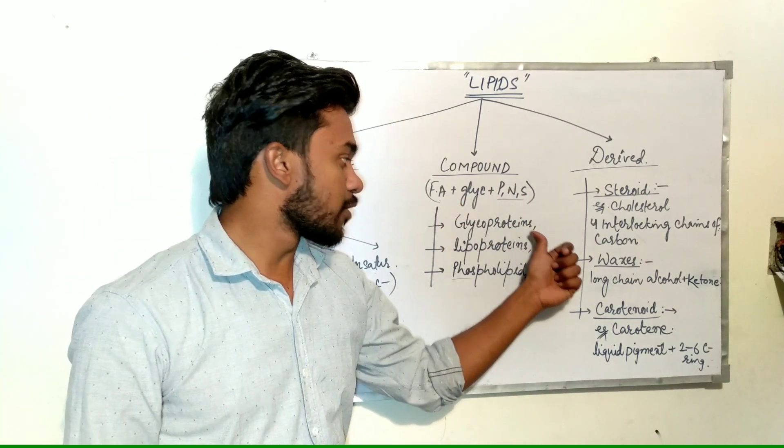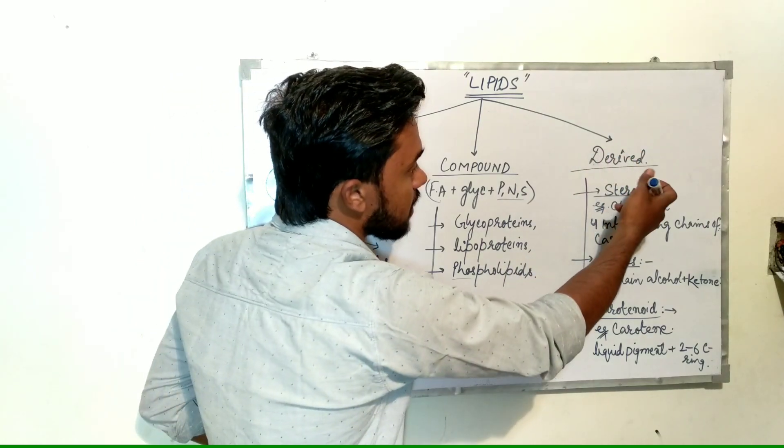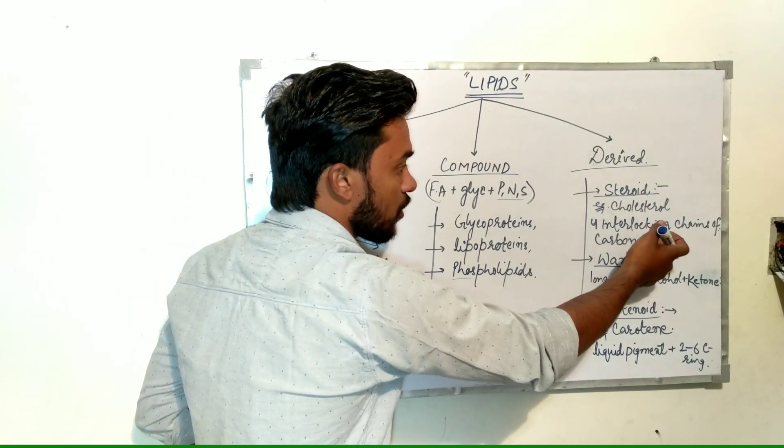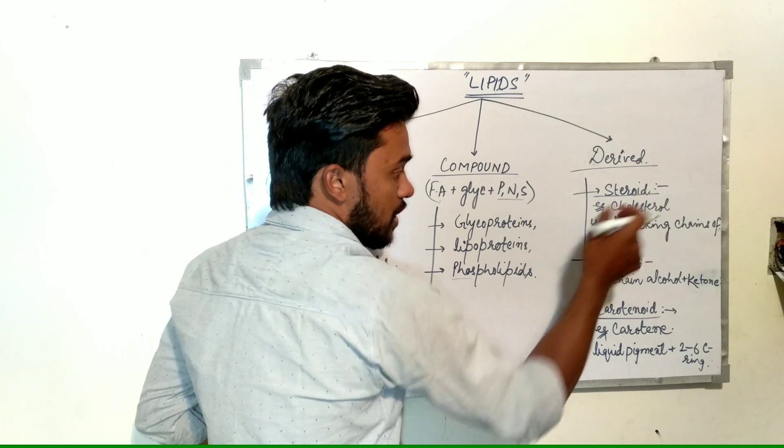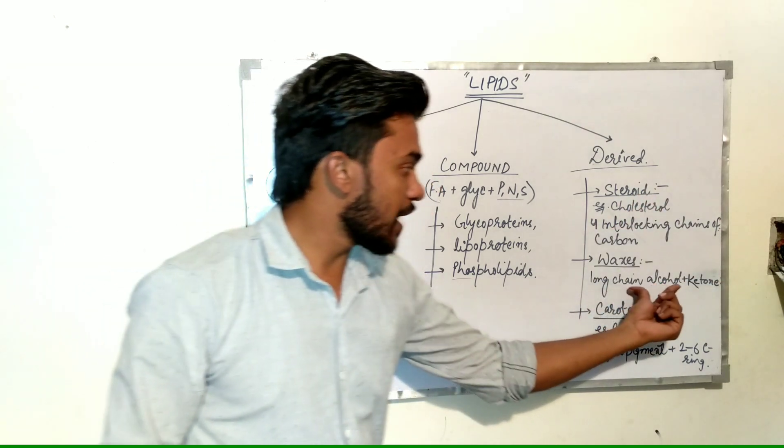Compound lipids may be further classified into glycoproteins, lipoproteins, and phospholipids. Derived lipids, such as steroids, are made up of four interlocking rings of carbon. An example is cholesterol. Waxes contain long chain alcohol plus ketone, and this long chain of alcohol is other than glycerol.